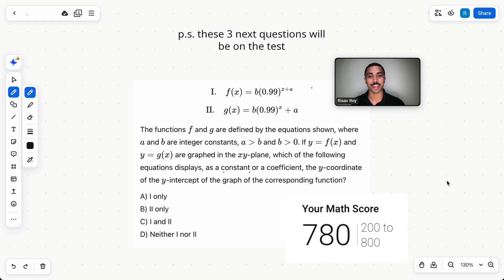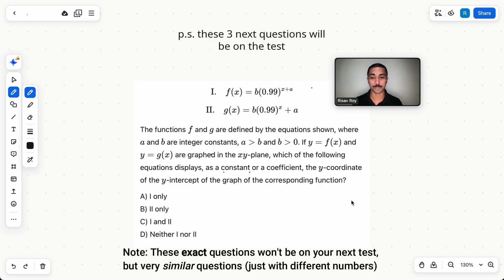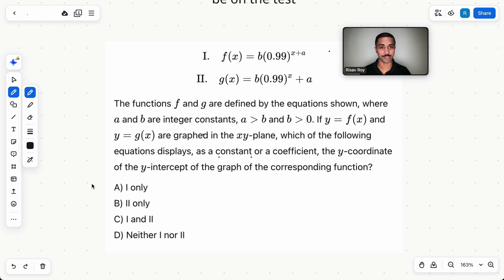My name is Rizav Roy. I scored a 780 on the math section of the most recent digital SAT, and I'm also a tutor for College Board, the company that makes the SAT. The three questions I'm about to show you are going to be on your next test. How do I know this? Because they were on the last test and the test before that, and every single digital SAT. So listen up.